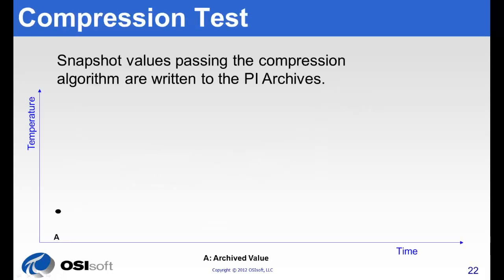Again, this is easiest to see if you see it in action. Just watch this. We're taking the raw values from our exception test before and applying compression to them.